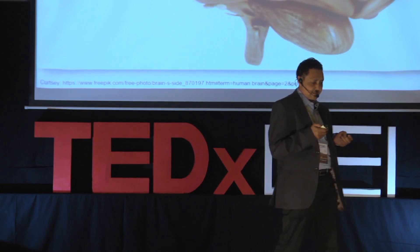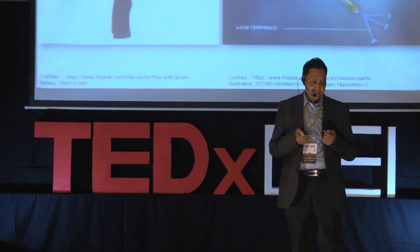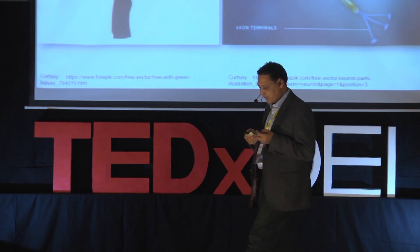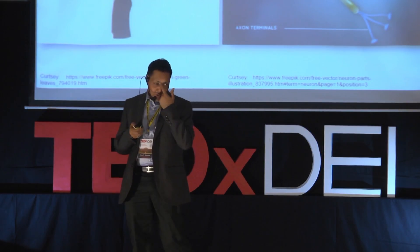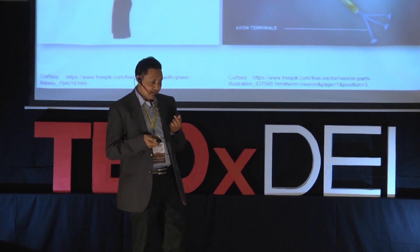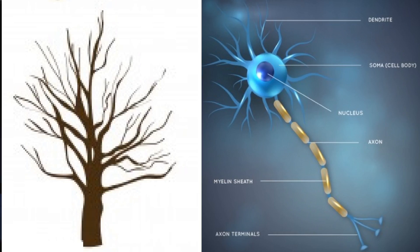Neurons are the structural and functional unit of the brain. One typical neuron is more or less like a tree, where the trunk is equivalent to the axon while the branches are equivalent to the dendrites.